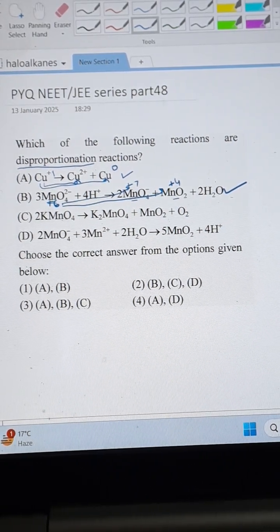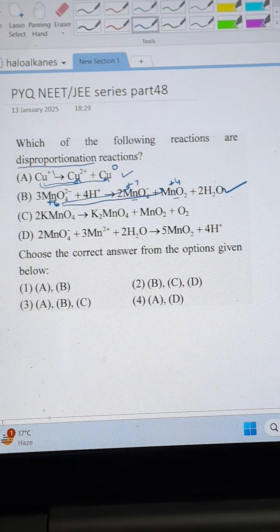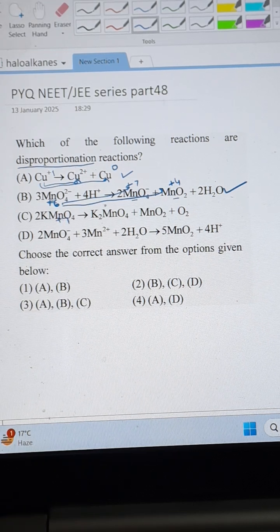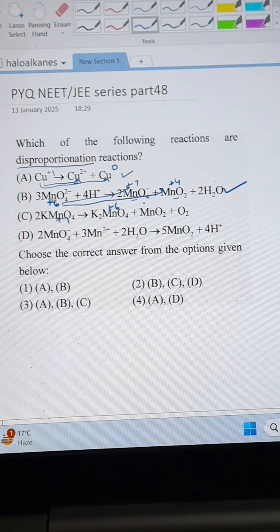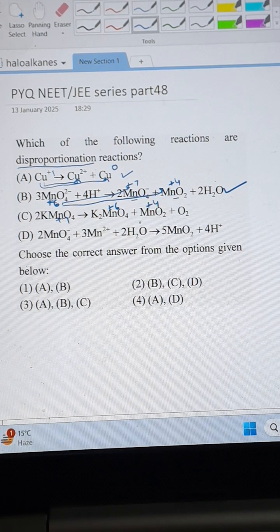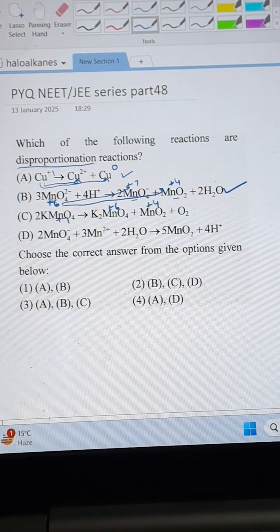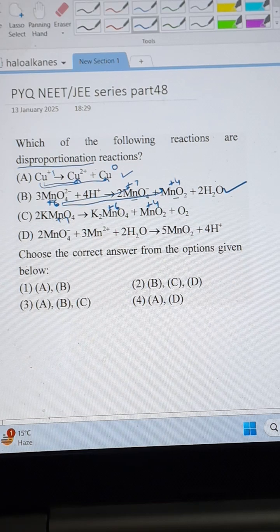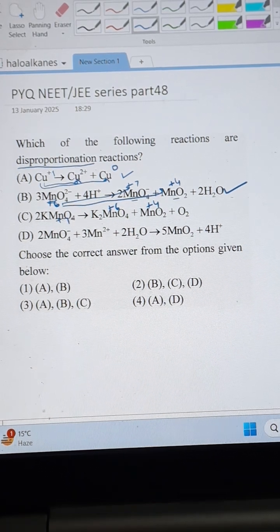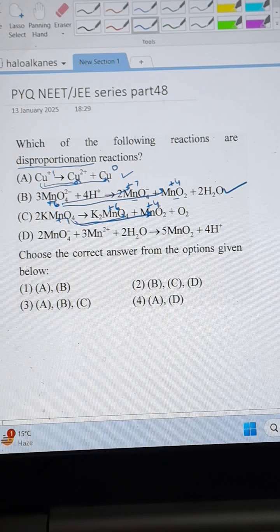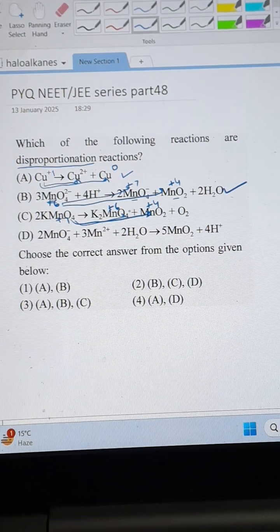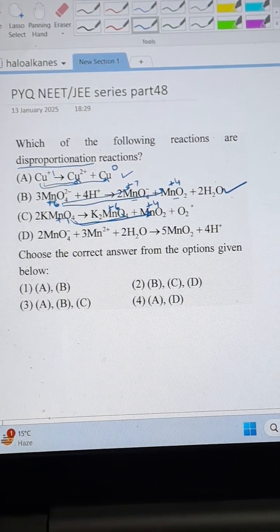Okay, third one. In this also we have to find for manganese only. Manganese is plus seven here. It is plus six here. And here it is plus four. So plus seven is undergoing two changes to plus six and plus four. But both of them are reducing because there is a reduction of charge in both the cases. So this is non-disproportionation reaction.